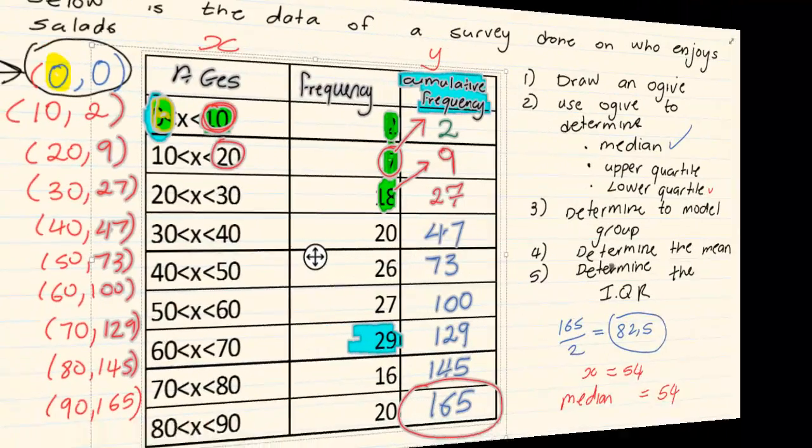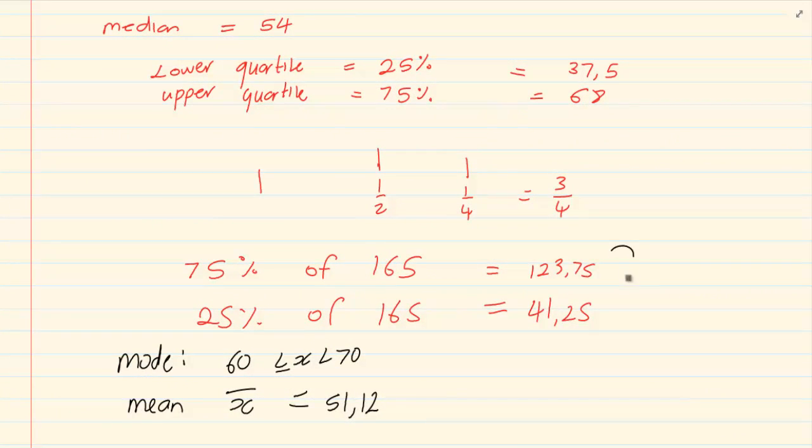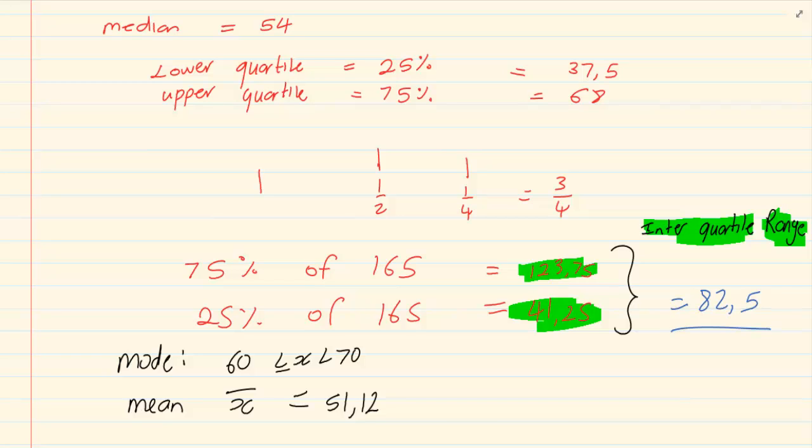Then the next question states, determine the IQR. IQR means interquartile range. Interquartile range means range means subtract the highest from the lowest. And when they are talking of the interquartile, they are talking of the inside quarters which refers to the upper and the lower. So we are simply going to say 123.75 minus 41.25. And the IQR would equal to 82.5. Thank you for watching.